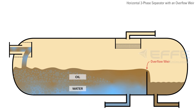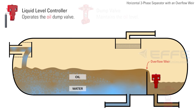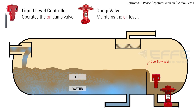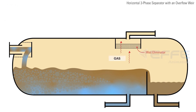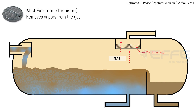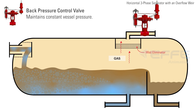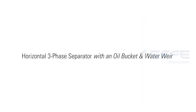The oil spills over the top of the overflow weir and a level controller operates a dump valve to maintain the oil level in an oil bucket. Gas rises to the top of the separator and exits through a mist extractor or demister to a back pressure control valve, which maintains constant vessel pressure.